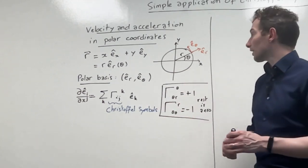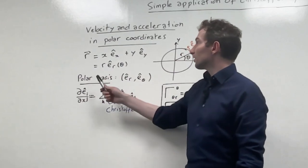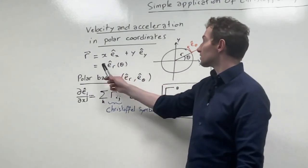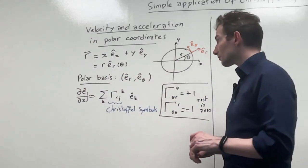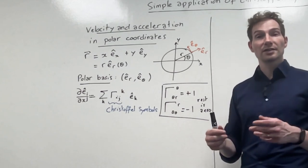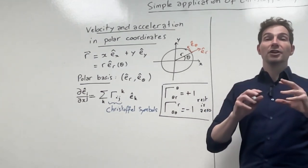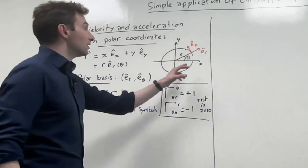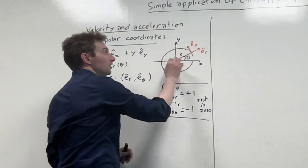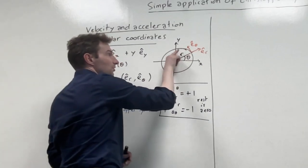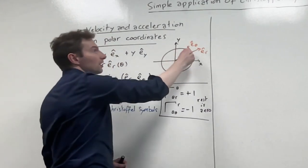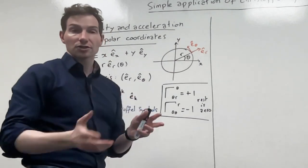From there you can express the position vector either in Cartesian coordinates as x*eX plus y*eY, or simply as R times eR(theta). We can define a polar basis, and this polar basis of vectors is actually local. As you can see from the orange pair of vectors, eR is aligned in the direction of the position vector. If you move the position vector, eR moves with it. Likewise, e_theta is always tangent to the circle and perpendicular to eR.